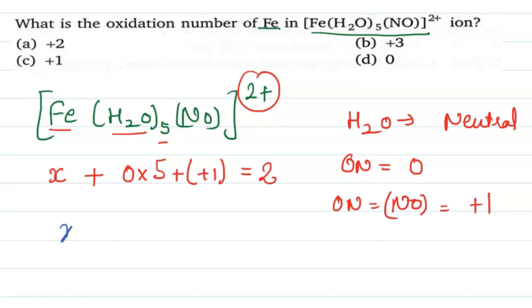Now let's simplify this equation. X plus 0×5 plus 1 equals 2. X plus 1 equals 2, so X equals 2 minus 1. This one is shifted to the right-hand side with a negative sign, equals 1.